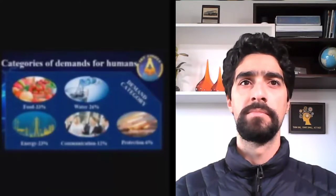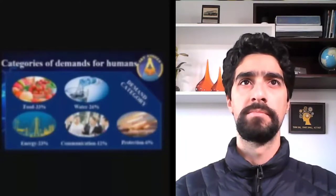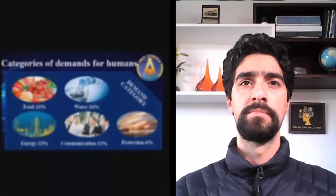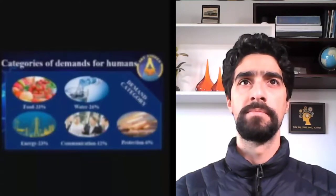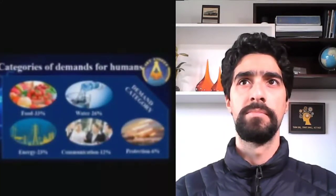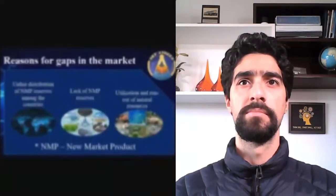Before starting our project, we made a brief image of what kind of demands humans have right now. If we divide it by categories, one of the biggest demands is food, then water, energy, communication, and protection. Energy is one of the critical demands of humankind. There are several gaps in the market, especially in the energy market.